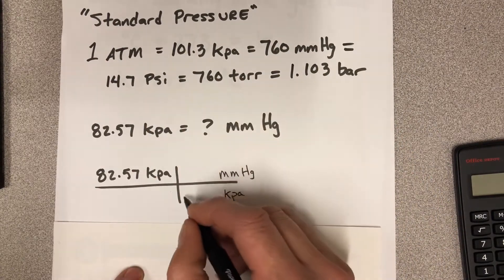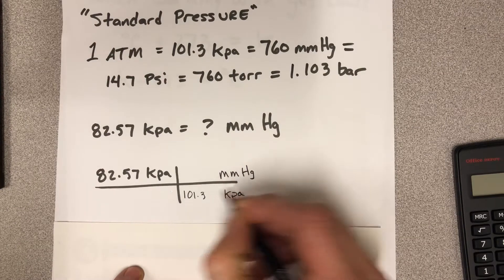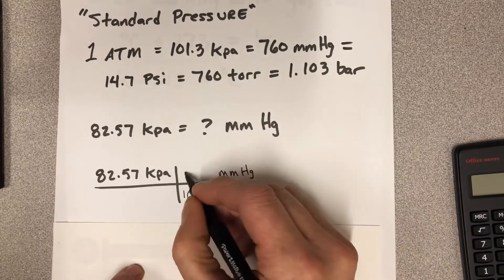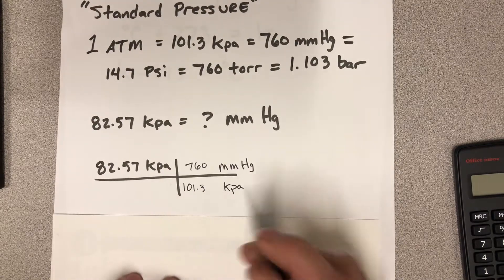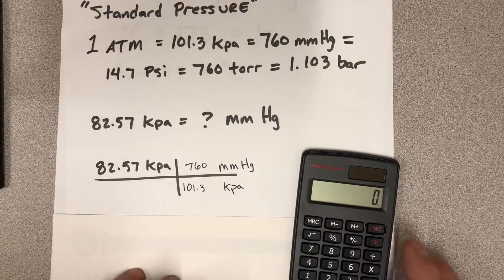So we just use the equivalent numbers. So for KPA, it's 101.3 and millimeters of mercury, it's 760. And so now it's just a quick multiplication across the top and divide by 101.3.